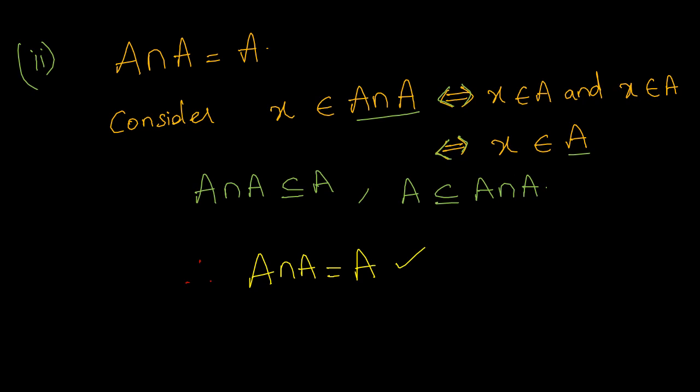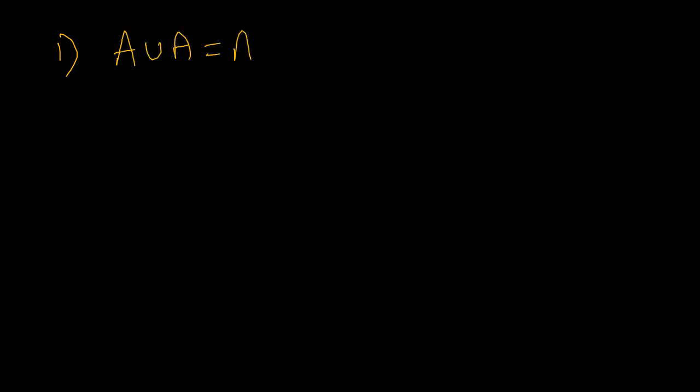These are the two important laws, and they are known as idempotent laws. We have seen the proof of both: A union A must be equals to A, and A intersection A must be equals to A. So now let us see some examples.